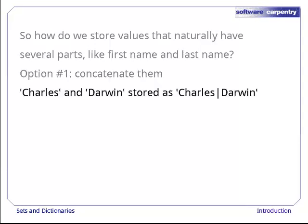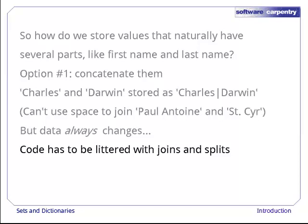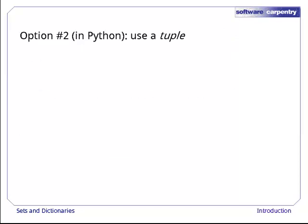We have to use a character like vertical bar instead of something more natural like a space, because if we join Paul Antoine and St. Cyr using a space, there would be three possible ways to split it apart again. Concatenating values is actually a pretty bad idea. First, we have to find a concatenator that can never come up in our data, essentially make a bet on what's going to happen in the future. Second, our code will wind up being littered with string joins and string splits, which will make it slower and harder to read.